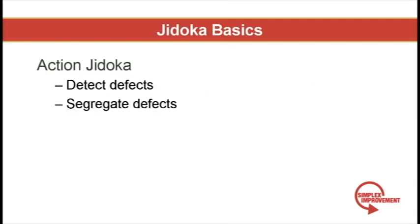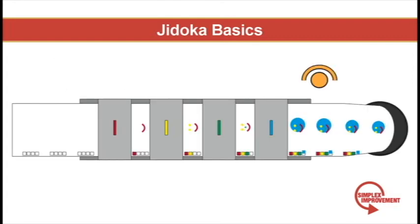Next is action Jidoka. At this stage, the machine not only has a mechanism for detecting defects, but it also has the ability to segregate defects into a separate bin from good parts. This prevents defects from making their way to the final customer. At this stage, an operator is not needed to run the machine, but may be needed to properly dispose of defective parts and make adjustments to the machine to prevent more defects from being generated.